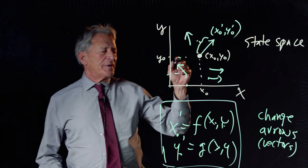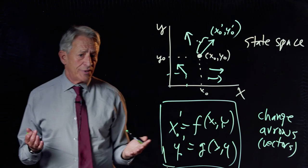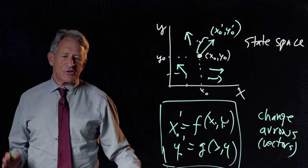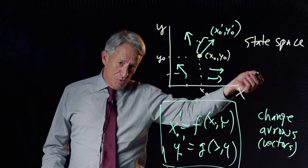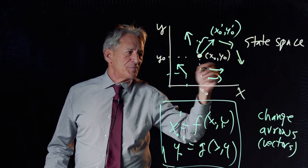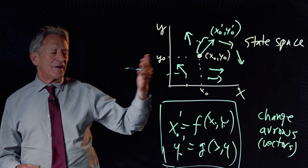And then we talked about the fact that this is now going to take you to another point. And at the other point, at the next point, there's going to be another change vector. And that is going to take you to another point, which has another change vector. And that's how the system is going to evolve, following these change vectors.